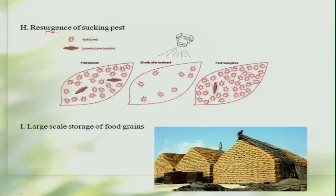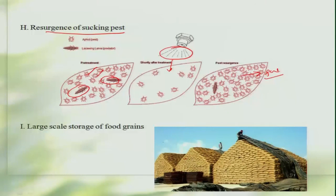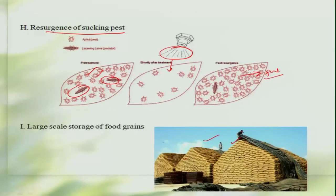Then there is the resurgence of pests — the resurgence of sucking pests is another reason. As shown schematically, there is a pest population and also natural enemies. When you apply a spray that kills all the natural enemies but leaves some of the pests, then because of the absence of natural enemies the pest population multiplies and becomes quite serious. Storage of large quantities of grains will also provide a good opportunity for insects to become colonized, multiply, and lead to a pestiferous nature.